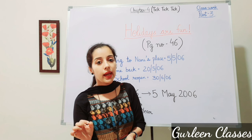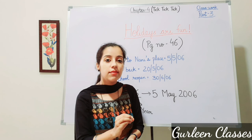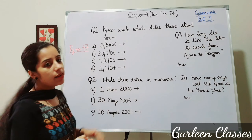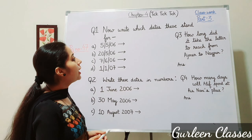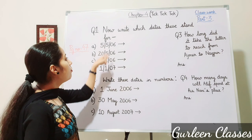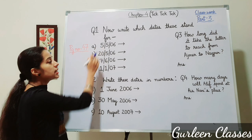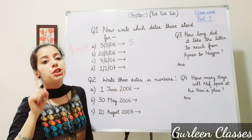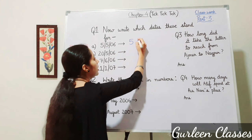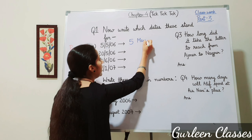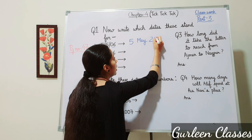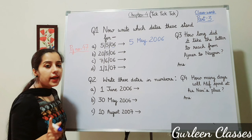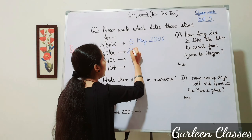Shabana received that letter on 6th May 2006, five days after it was sent. Now let us do the questions from NCERT book page 47. Question 1: Write which dates these stand for. Part A: 5/5/06 — 5 is the date, 5 is the month which is May, and 06 is the year 2006. Part B: 25/5/06 — 20 is the date, 5 is the month May, and 06 is the year 2006.